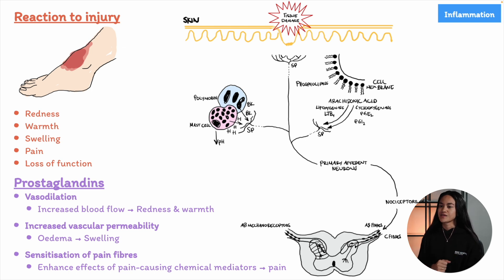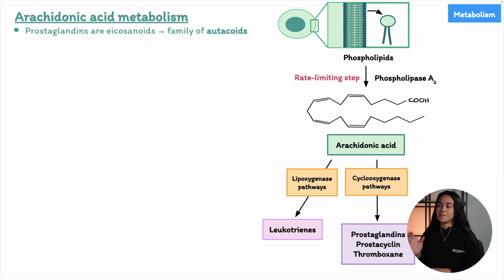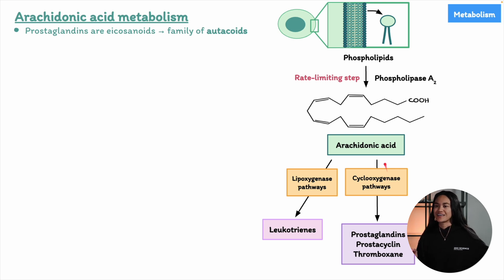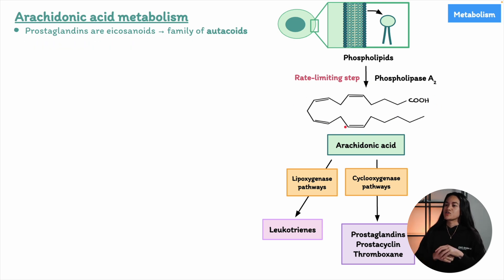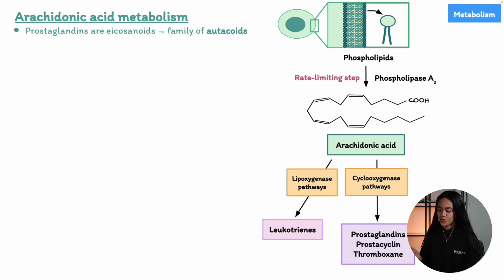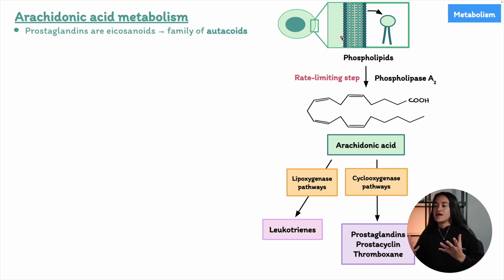Let's dive deeper into the eicosanoid family. Eicosanoids are a group of signaling molecules made from fatty acid precursors, and their primary precursor in human cells is arachidonic acid. Arachidonic acid is a type of unsaturated fatty acid that contains 20 carbon atoms — which is where the name eicosanoids comes from. It comes from the Greek word 'eicos,' meaning 20. Most of the arachidonic acid in cells is stored in the membranes as part of the phospholipids, so they are not free molecules.